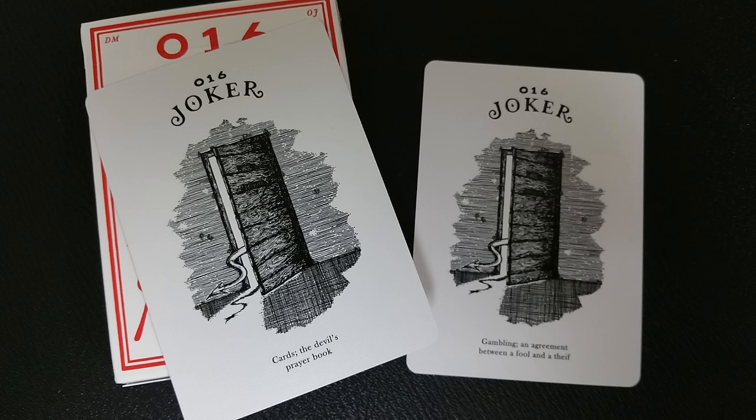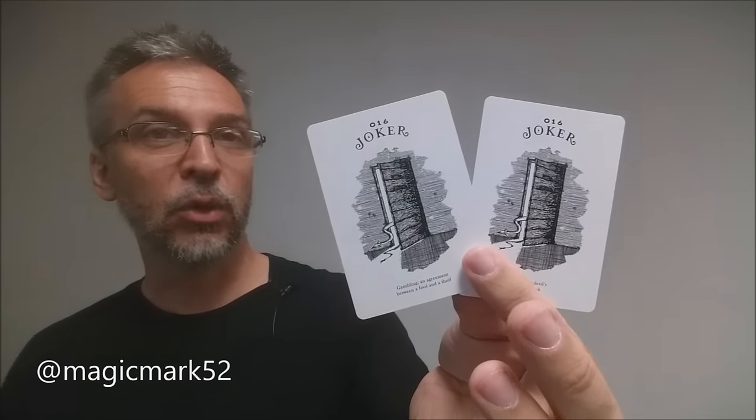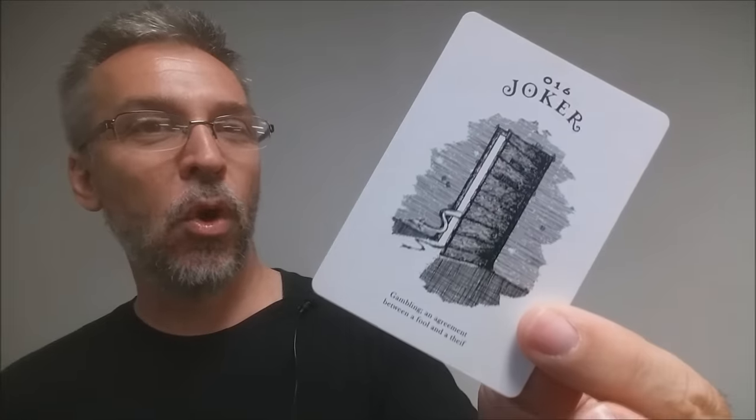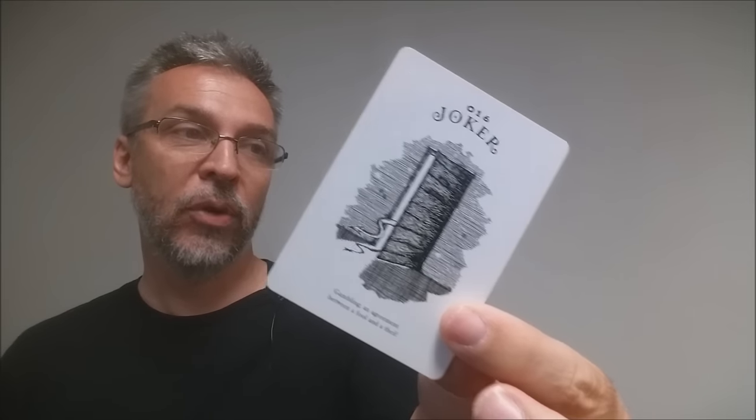With this deck, you're going to get two jokers that are not completely identical. It's an open door with the devil's tail hanging through it. Daniel Madison says that this was inspired by a tattoo from Mark Calabrese, who is another illusionist magician. This joker has a quote below the doorframe. One quote says, gambling is an agreement between a fool and a thief. And the second one says, cards, the devil's prayer book.